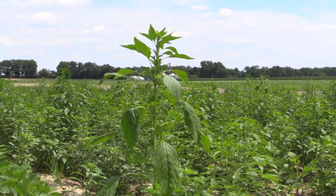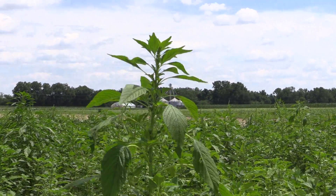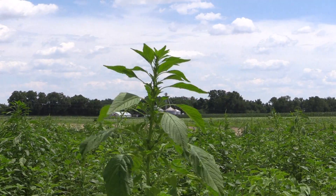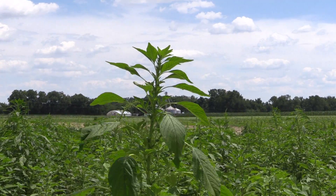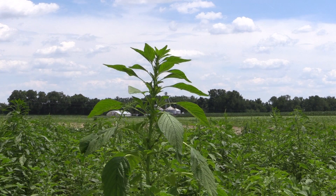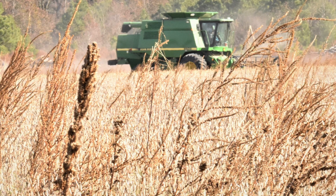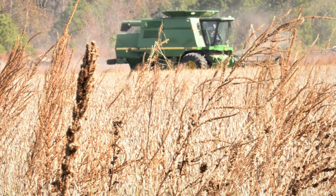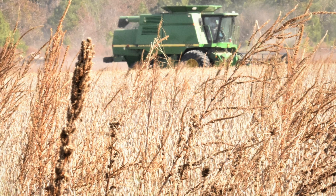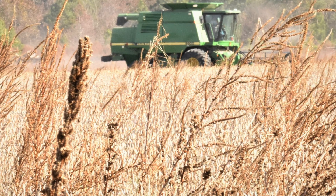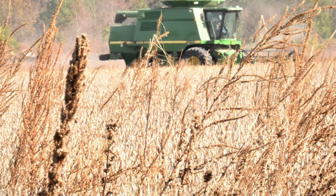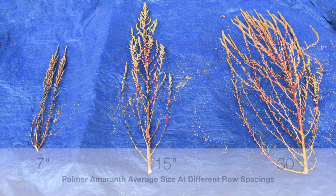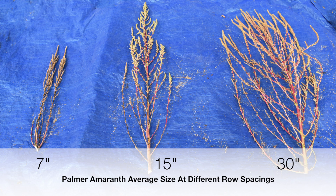One of the most prominent herbicide-resistant weeds in the eastern U.S. is Palmer amaranth, a type of pigweed. Pigweeds are well known for growing far taller than most crops and have become resistant to multiple groups of herbicides. Narrow row soybeans are able to alter the growth pattern of pigweed, decreasing the number of leaves and amount of biomass it produces.